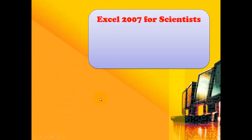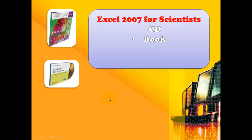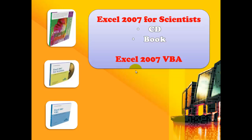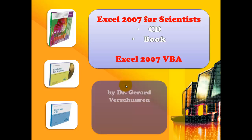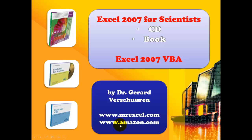This is just the tip of the iceberg of course. I recommend the CD Excel 2007 for Scientists — it has much more than what I just discussed with you. If you prefer a book over a CD-ROM, go for the book Excel 2007. And in addition you may want to buy the Excel 2007 VBA CD-ROM. I wrote all three of them. You can find them at MrExcel.com or of course Amazon.com.